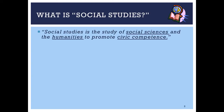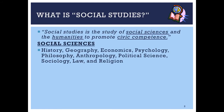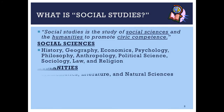Before I tell you what those terms mean, it might be good for you to discuss in your table groups what you think they mean and we'll see how close you are. First of all, social sciences involve the topics of history, geography, economics, psychology, philosophy, anthropology, political science, sociology, law, and religion. You probably know some of those things but not all of them. Safe to say, before you get out of high school you're going to be learning quite a bit about most of those topics, and some you'll have an opportunity to study in depth in college.